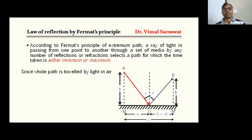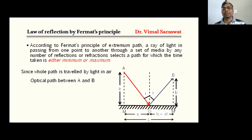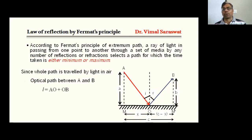Now since the whole path is travelled by light in air, there will be no use of refractive index since the refractive index of air is 1. The optical path between A and B is L = AO + OB. To find the value of AO, we use the right-angle triangle AMO, where AO is the hypotenuse, AM is the base, and MO is the perpendicular. So AO = √(a² + x²).